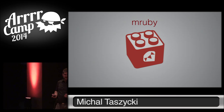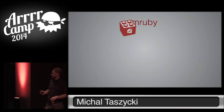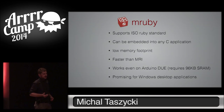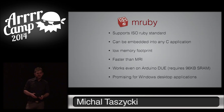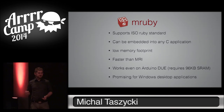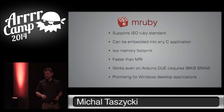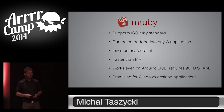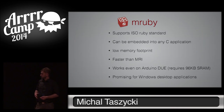There is also MRuby. How many of you use MRuby? None. So, this one is pretty interesting. It basically supports ISO Ruby standard and it can be embedded into any C application or library. It means you can put it into any kind of application that can be linked with C. So, with MRuby, you can potentially create applications that run on any platform — Windows, Android, iOS, Linux, whatever. It works even on Arduino Due because it requires quite a lot of RAM, like 96 kilobytes. It won't run on the plain old Arduino, but it works on Raspberry Pi, Arduino Due, and a couple of other embedded devices. And it's basically promising for Windows desktop applications.